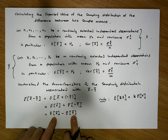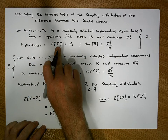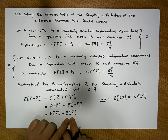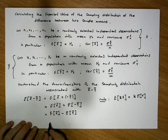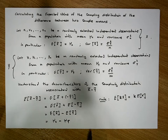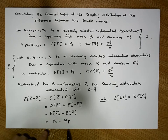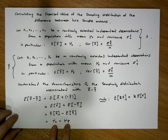So what are these two values? The expected value of x bar is mu of x, and the expected value of y bar is mu of y. So this reduces to mu of x minus mu of y. What we have shown is that the expected value of the difference between two sample means is an unbiased estimator of the difference between the two population means — that is, the expected value of the sampling distribution equals the difference between the two population means that the samples have been drawn from.